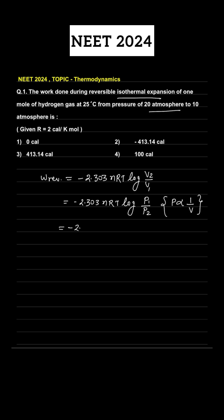Now, putting in the values: moles n = 1, R = 2 calories, temperature T = 298 K (converted from 25 degrees Celsius), and log(P₁/P₂) = log(20/10) = log 2 = 0.3. So we have: W = minus 2.303 × 2 × 298 × 0.3, and this value will be in calories.